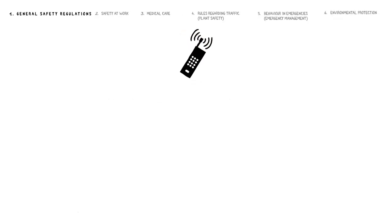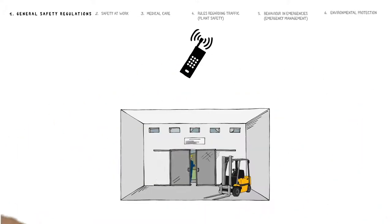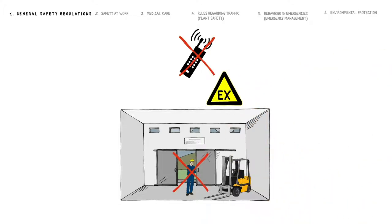Mobile phone calls are only allowed in the marked traffic routes in the canteen area. Mobile phones are not permitted for use on the company grounds. Devices that are not explosion safe must not, under any circumstances, be brought into hazardous areas.